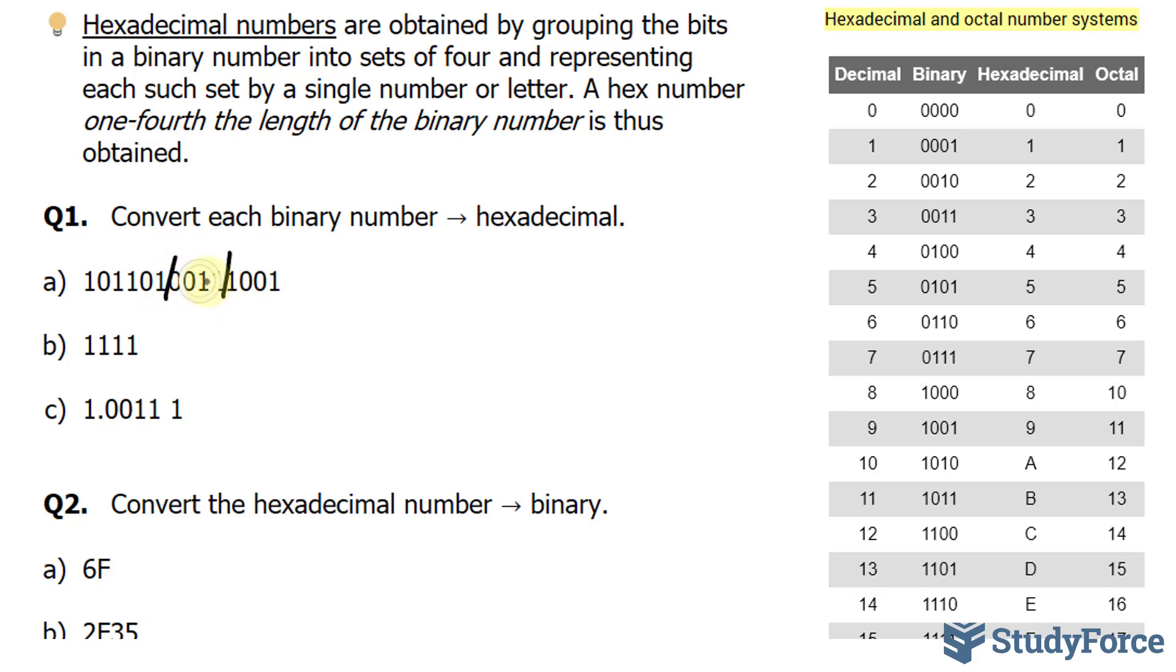So that's one group, that's another, and this is another. This last group of two can be written as 0010.